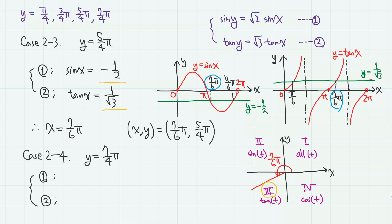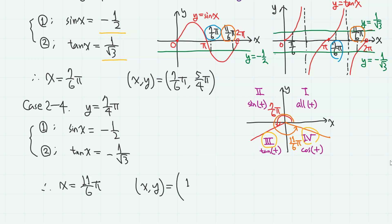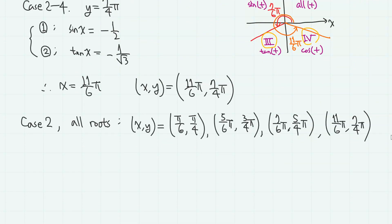For the last case, when y equals 7π/4, we have sine x equals minus 1/2 and tangent x equals minus 1 over square root of 3. Therefore, we have x equals 11π/6, which is a fourth-quadrant angle. So the root is (11π/6, 7π/4). From case 2, we obtain these 4 pairs of roots.